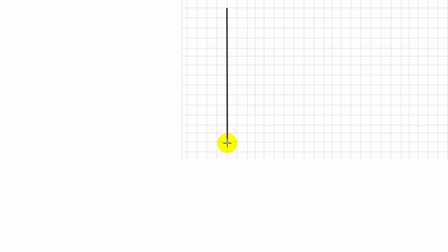In the graph, this is the Y axis. This is the X axis. Flow is plotted on the X axis. Head is plotted on the Y axis.